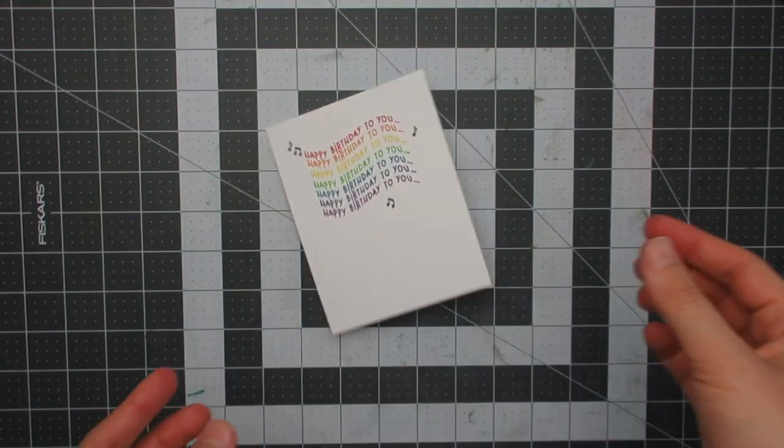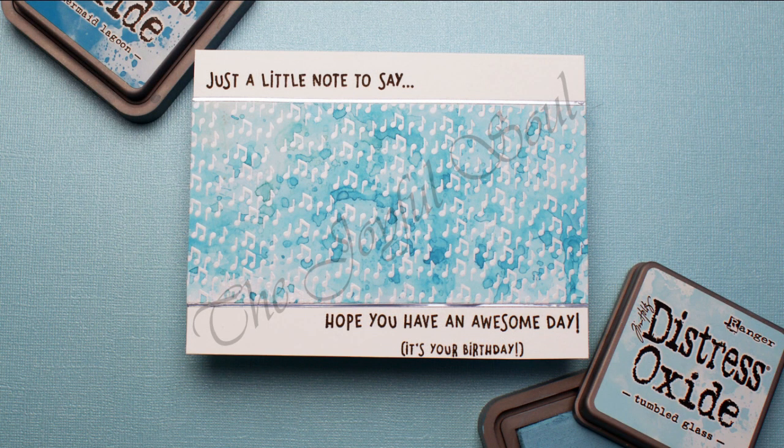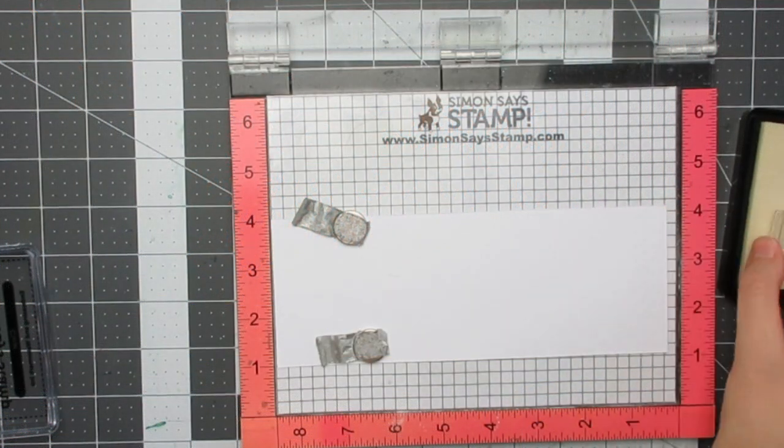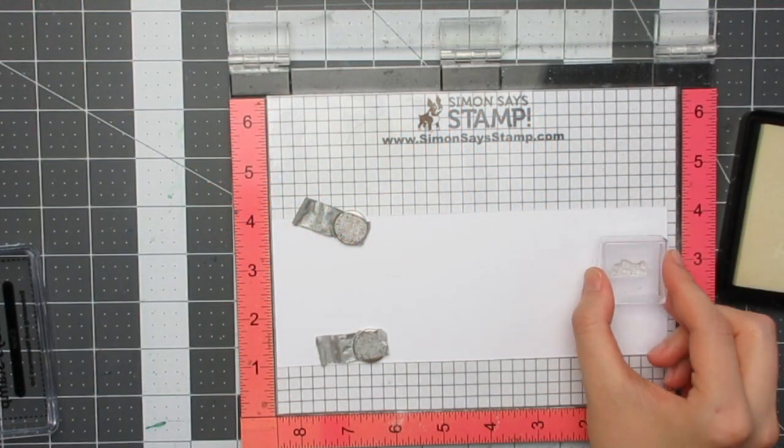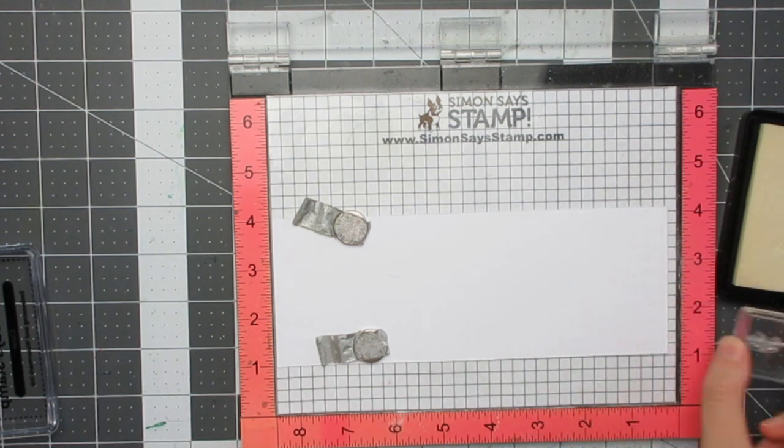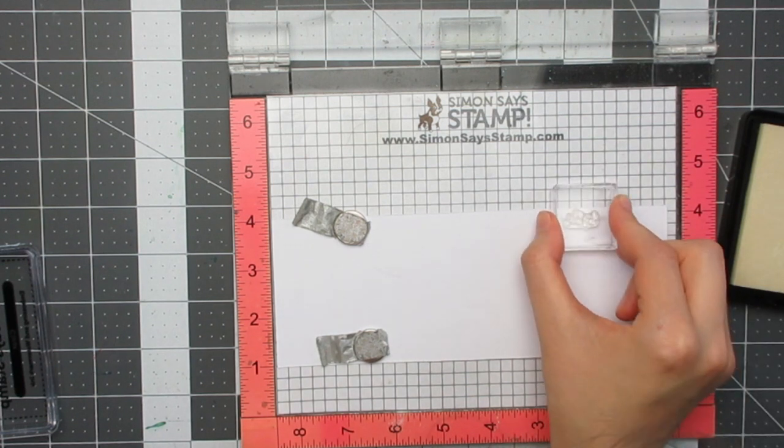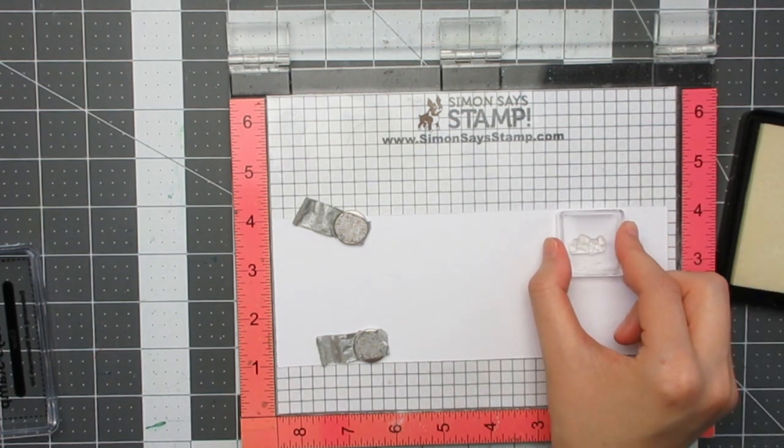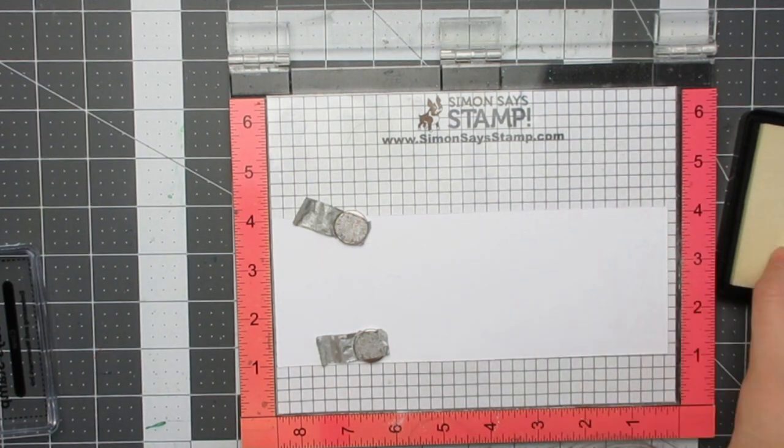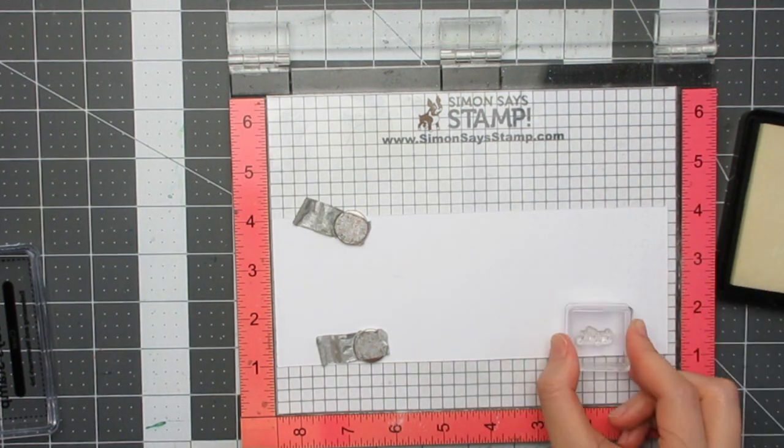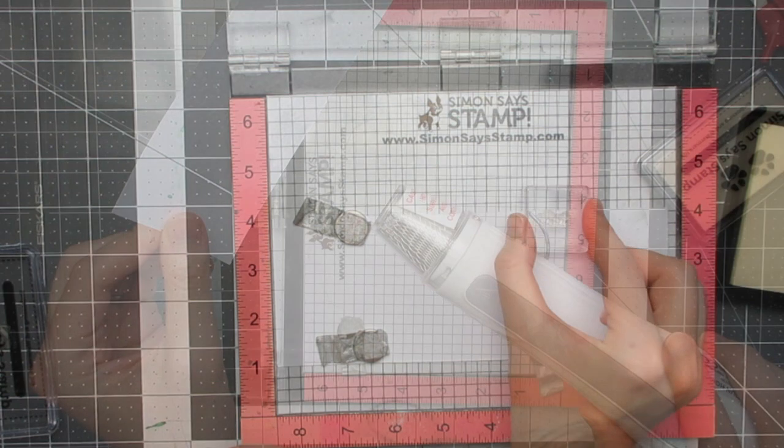Card number three is the one that took me the longest and is the least clean and simple, but still relatively simple and didn't take too long to make. I'm starting with a snippet of watercolor paper and I've treated it with my anti-static powder tool. Then I'm taking the row of musical notes from the stamp set and just stamping them repeatedly all over that paper with embossing ink. I then coated them with clear embossing powder and heat set them.